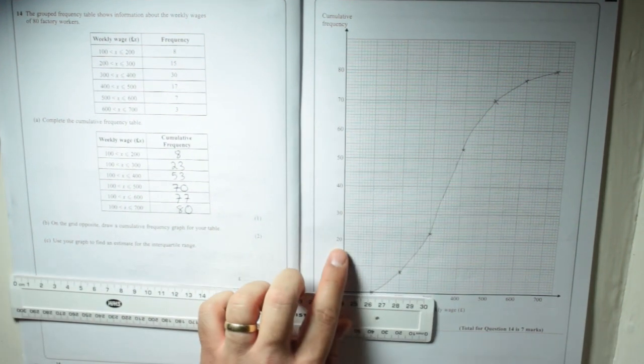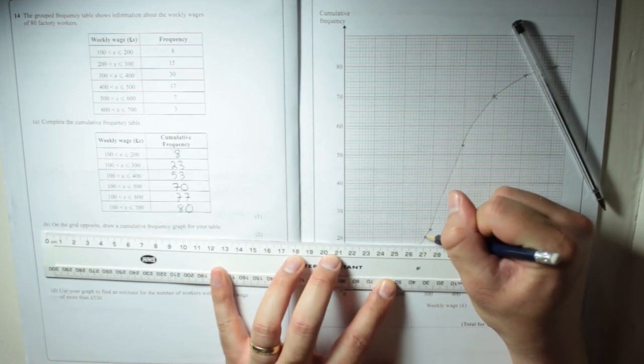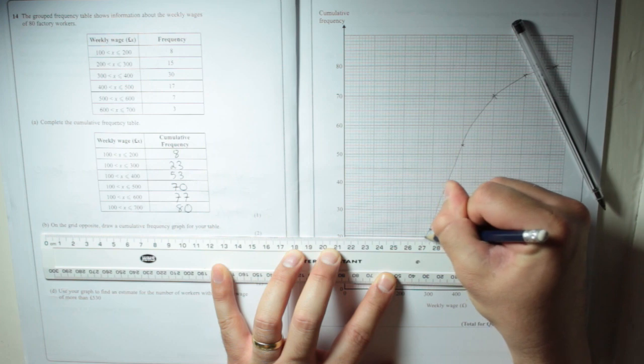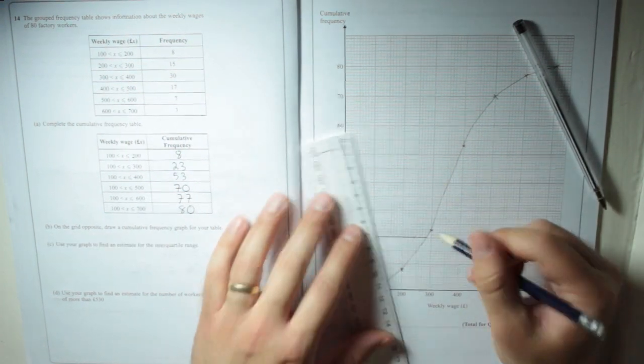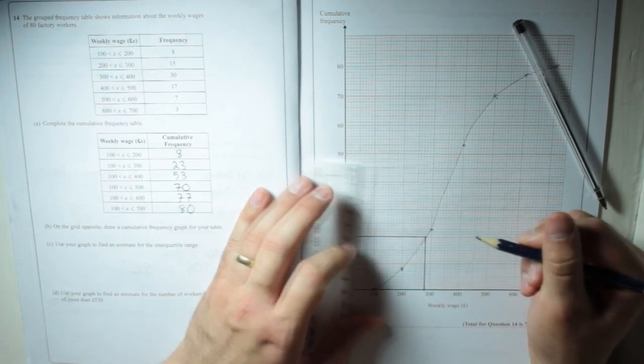So, what we're going to do is, there's 20, I'm going to draw a line going from 20 until I hit the cumulative frequency curve. That's there, then I'm going to go down, like that.